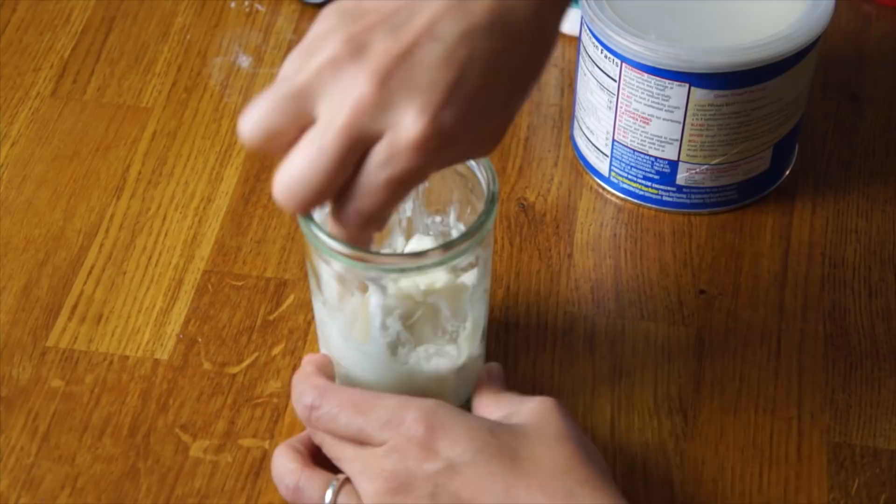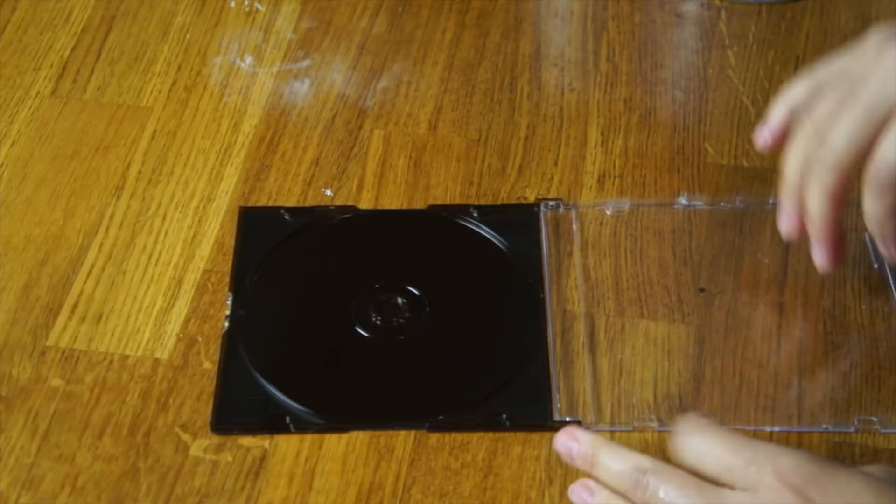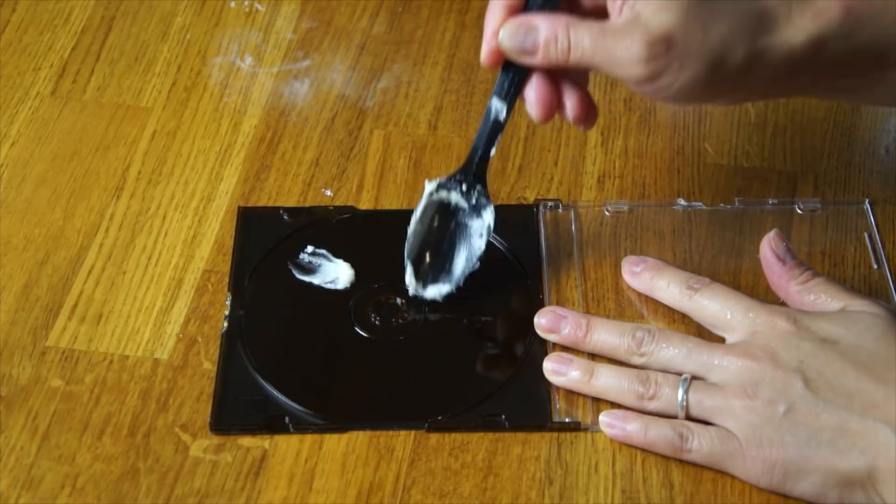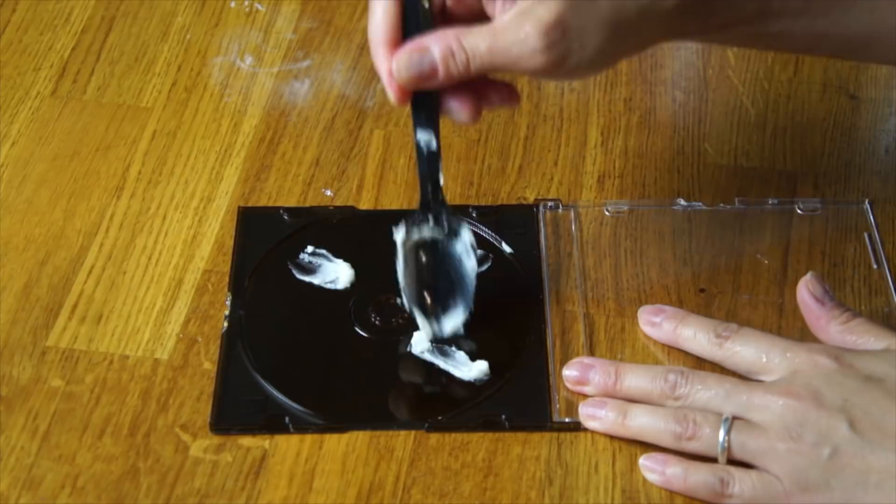Now to set our trap, we're going to open up the case. We're going to just smear a little bit of this bait on the inside of the trap. I've heard a little X pattern and not to put too much. So just that much.